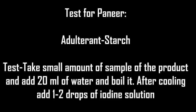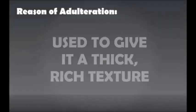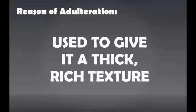Test for Ghee — adulterant: starch. Take a small amount of the product sample, add 20 ml of water, and boil it. After cooling, add 1–2 drops of iodine solution. If the solution turns blue, it indicates the presence of starch. Reason of adulteration: used to give it a thick and rich texture.